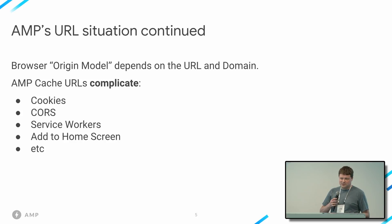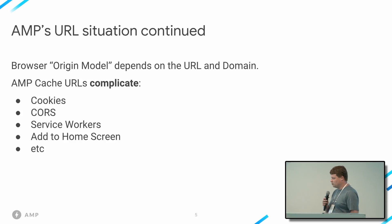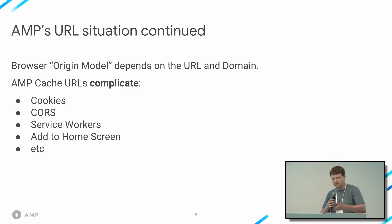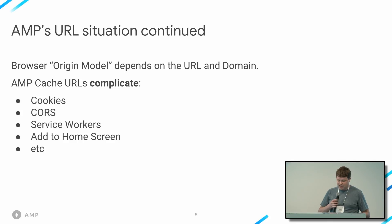There's the URL itself, and that in turn causes all sorts of problems in the browser. Cookies are based on domains, CORS, service workers, et cetera — the list goes on. Cookies are a particularly interesting one, because they break all sorts of analytics sessions where you want to know how a user interacts with your website as they move from the AMP cache to your domain and throughout your domain. So why do we put up with this, and how does it create the URL situation?